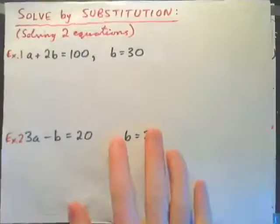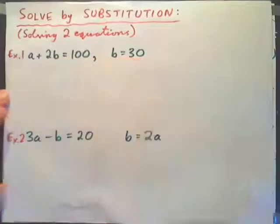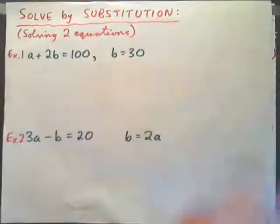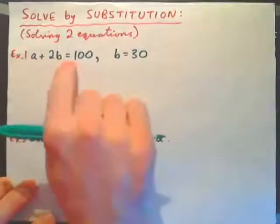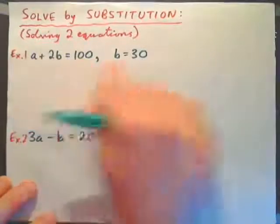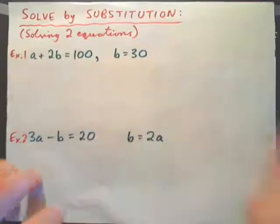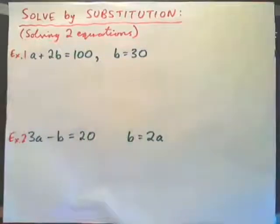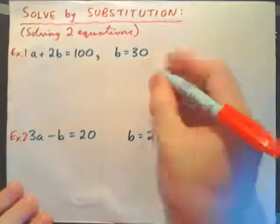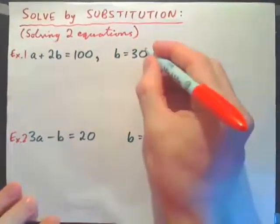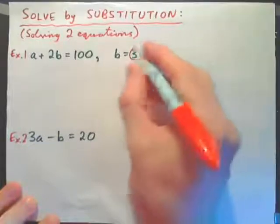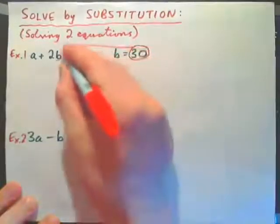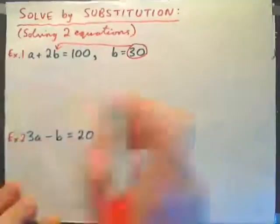Example 1: a plus 2b equals 100, b equals 30. We can imagine these equations as saying an apple plus 2 bananas costs 100 cents, or $1, and a banana costs 30 cents. The only new skill we need is substitution — it is where you take a value and plug it in for a variable.